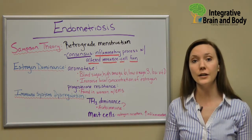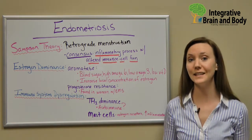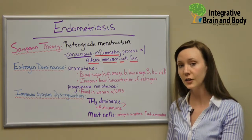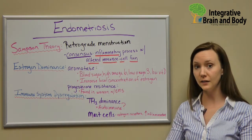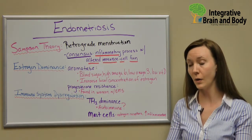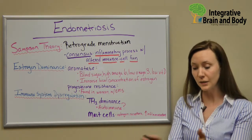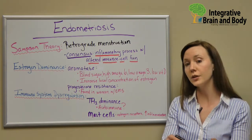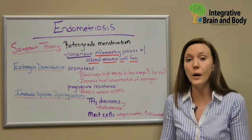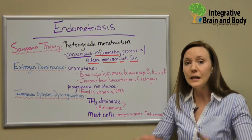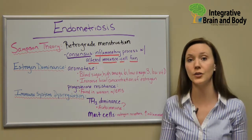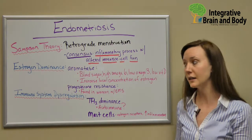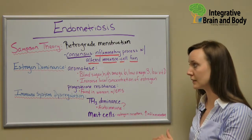We also see progesterone resistance in women with endometriosis. Sometimes there's a genetic factor and sometimes it's just kind of the luck of the draw. Sometimes we see women who are taking progesterone to control their endometriosis and they do well initially, but then they have to keep increasing the amount of progesterone they're taking in order to feel relief — that's considered progesterone resistance.